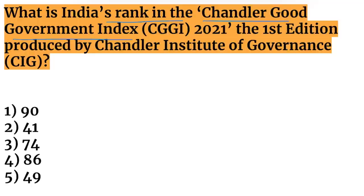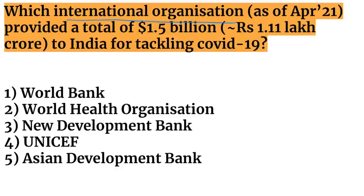Next question: what is India's rank in the Chandler Good Government Index, produced by the Chandler Institute of Governance in its first edition? India's rank is 49 in this first-ever Chandler Good Government Index.